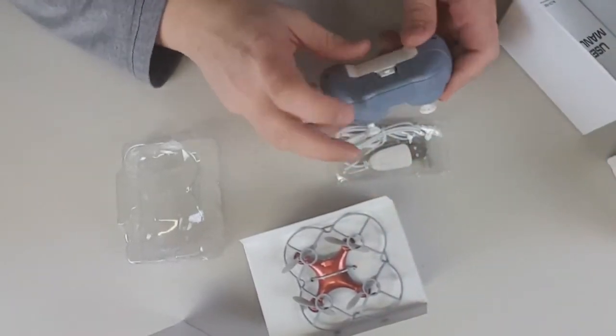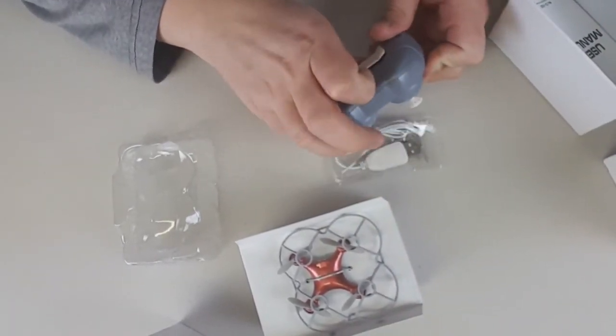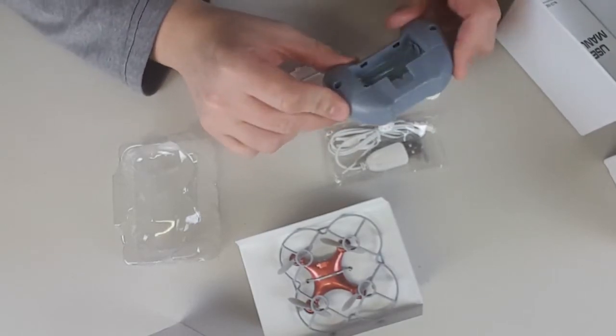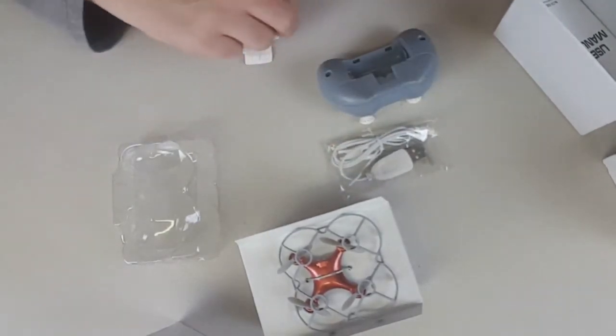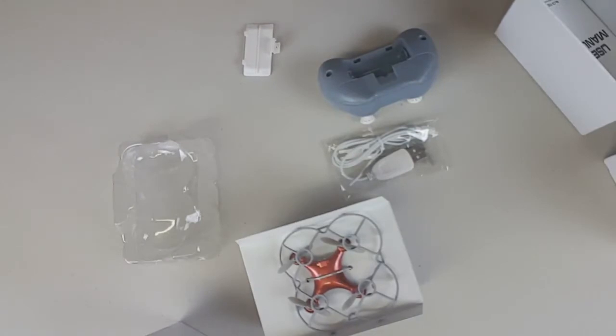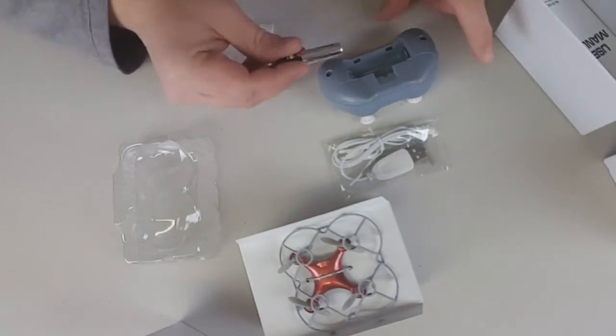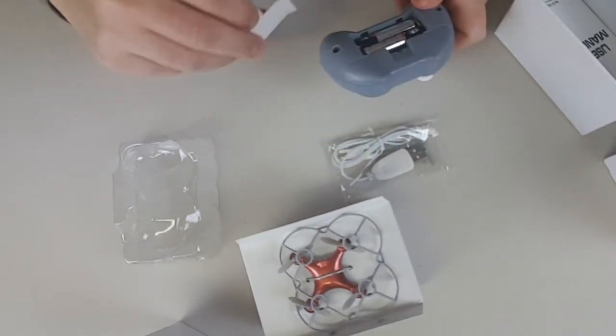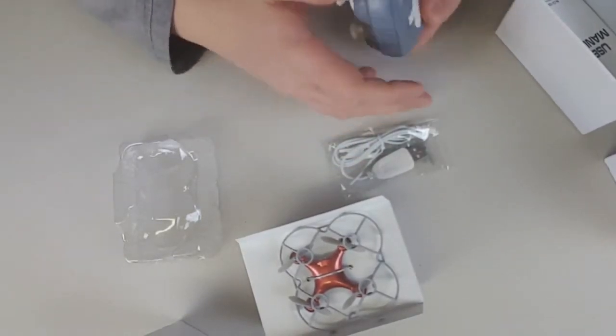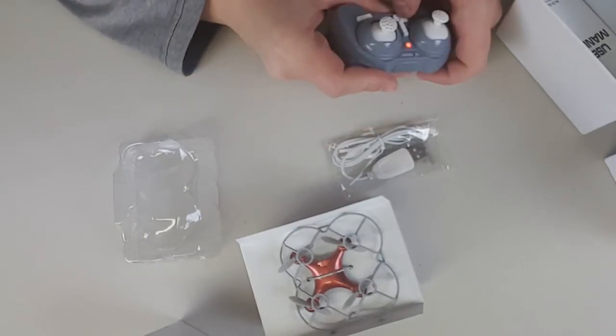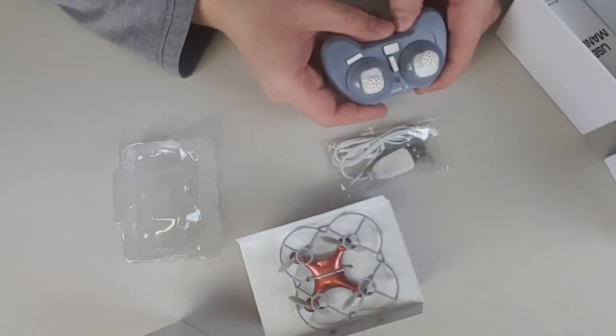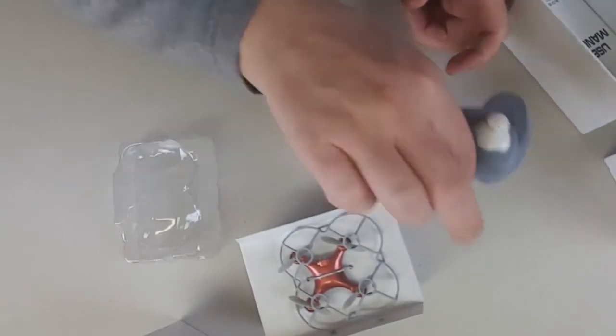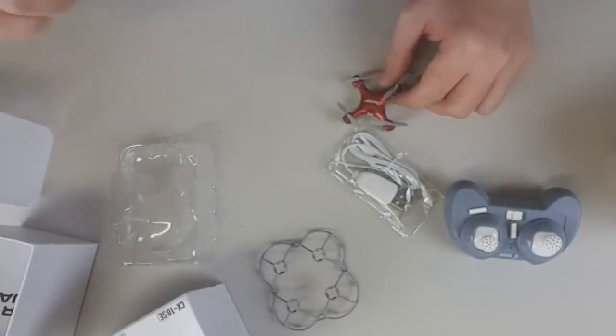So for this controller I want to put batteries to show you how this baby flies. So we need two triple A batteries. What do I have over here? I think for my remote control, one, two.